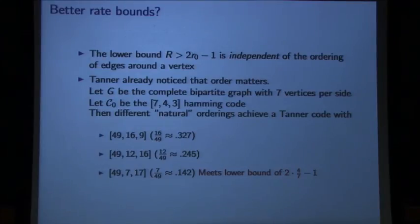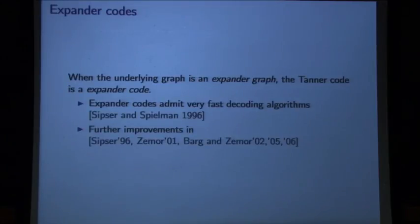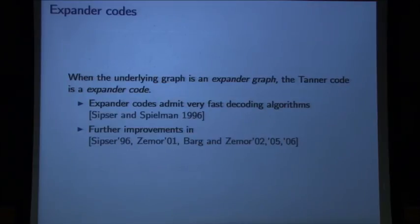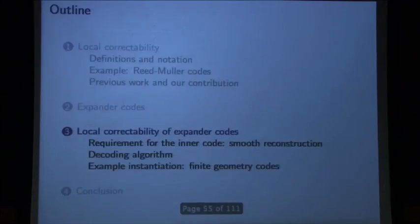This Tanner construction works for any graph. We want to focus on the case where the graph is an expander, because when the graph is an expander you can get really fast decoding procedures. For all of the Tanner code stuff — natural encoding, natural distance properties, natural rate properties — decoding is still not trivial. But if the graph is an expander, then you get decoding that can be really fast. This is the traditional notion of decoding where you want to decode the entire message. That's the background; now I'll talk about our construction.